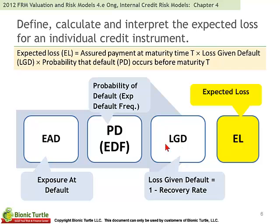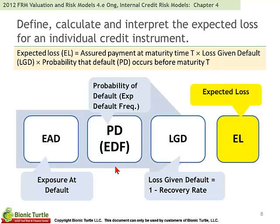The most common distribution for beta here means the variance is going to be non-trivial, so you'll always be given that input. Also keep in mind that loss given default is the same thing as one minus the recovery rate. On the exam, this could really trip you up because you could be given either the recovery rate or loss given default, and you want to make sure you're using the right one. If we want expected loss, we want to multiply probability of default times the loss conditional on the default.